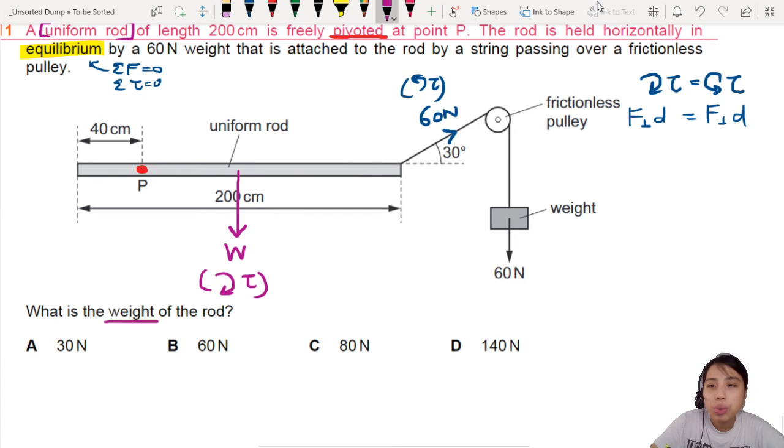So, that one is weight. It's perpendicular to the rod. So, that's the perpendicular force. Distance. What's the distance? From here to here. That will be 100 minus 40. So, 60 cm. And I'm going to keep everything in cm because I can. Because both sides of cm will cancel out.